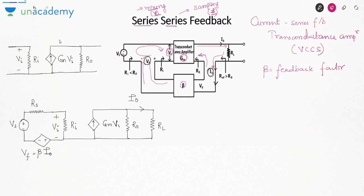The feedback voltage depends on the current flowing through the load resistance RL. Always remember: the term containing feedback is represented as a dependent source. Our objective is to find three things: gain, input resistance, and output resistance. Let us first talk about the gain.